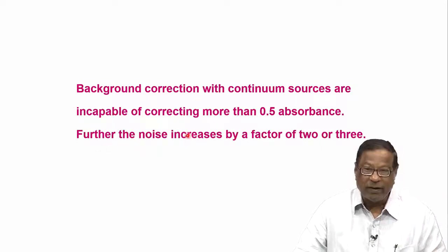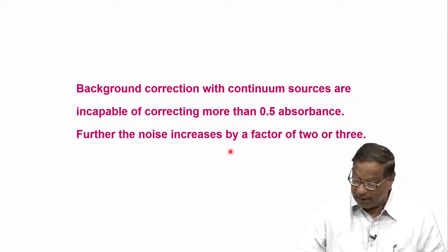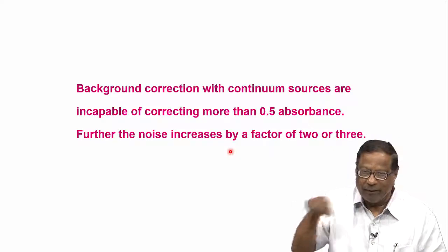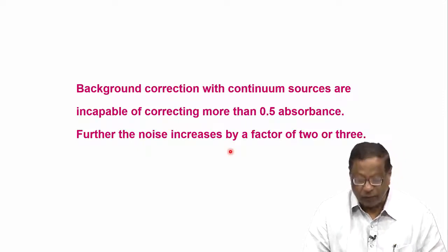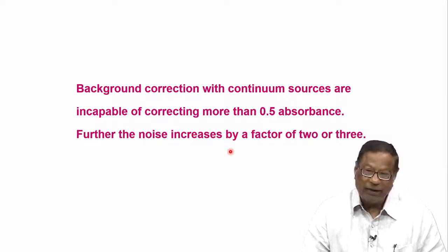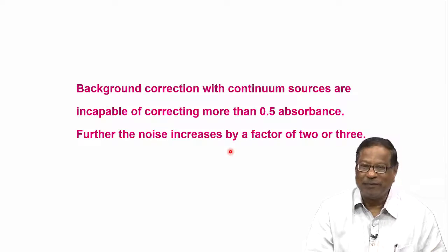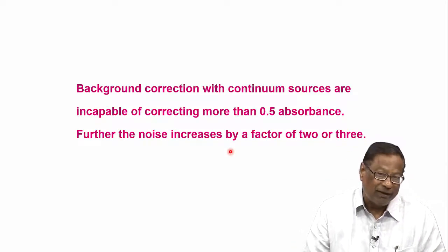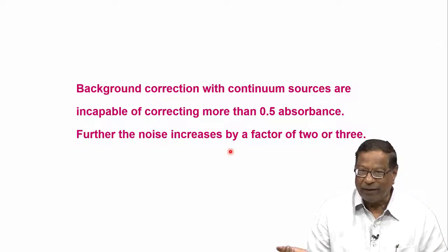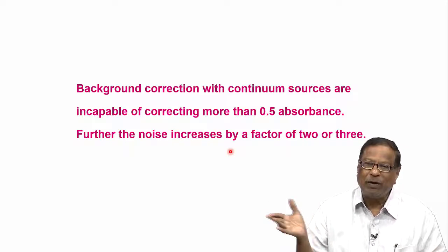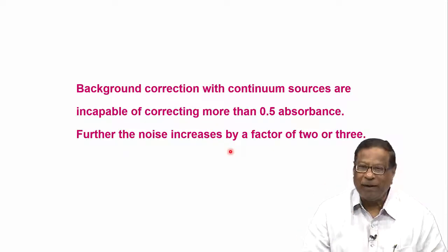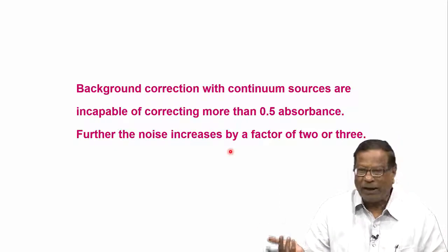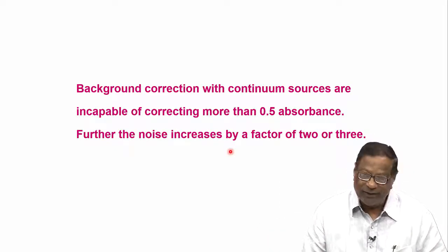If the background absorbance of the blank is more than 0.5, it is a little difficult to correct the background coming from the sample. The noise increases by a factor of 2 or 3, meaning the signal-to-noise ratio decreases. We need the signal-to-noise ratio to increase for good atomic absorption measurements, so we try to keep the background absorption less than 0.5 as far as possible, which is to be subtracted from the hollow cathode lamp signal.